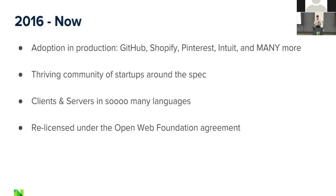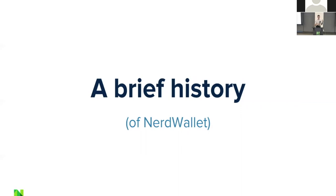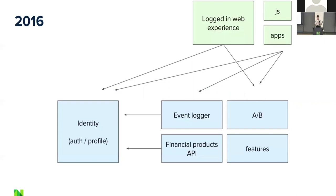Now that we've covered a little bit of GraphQL history, let me give you a brief history of NerdWallet to set the stage. If we go back to 2016, we had a simplified stack: a large WordPress installation powering our content, a logged-in web experience, a bunch of little JavaScript apps, plus systems for identity, authentication, profile, event logging, financial product APIs, A/B testing, and feature flagging. Everything was pretty tightly coupled with direct links between our products and the back-end interfaces.